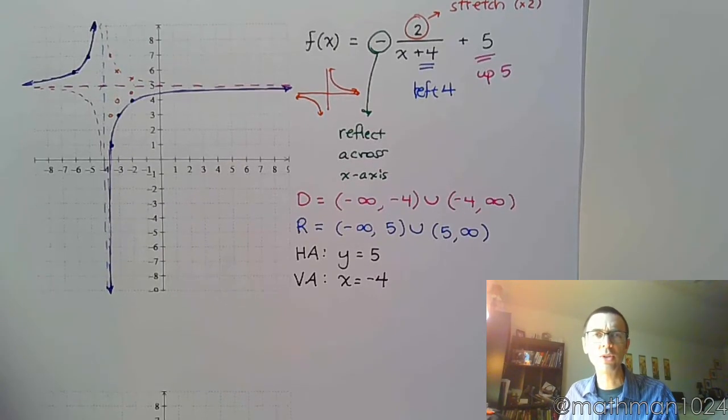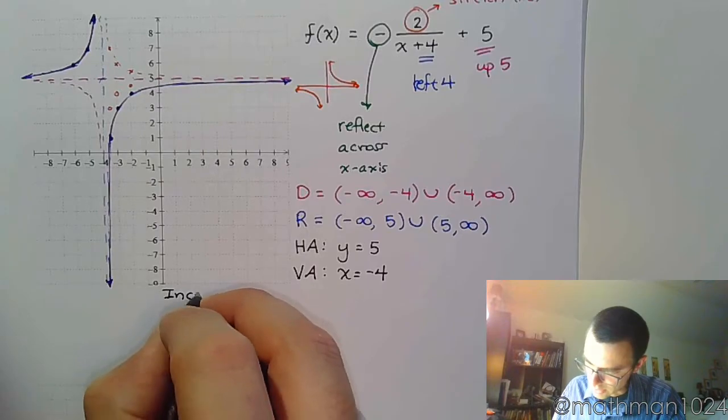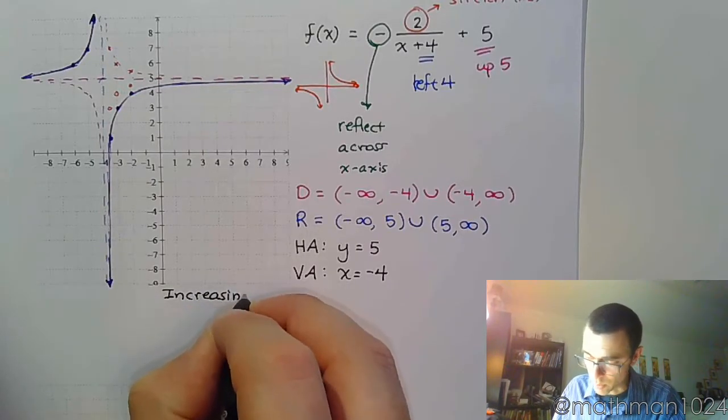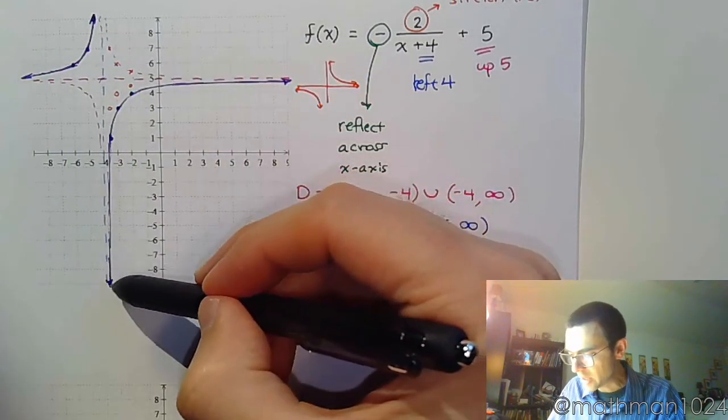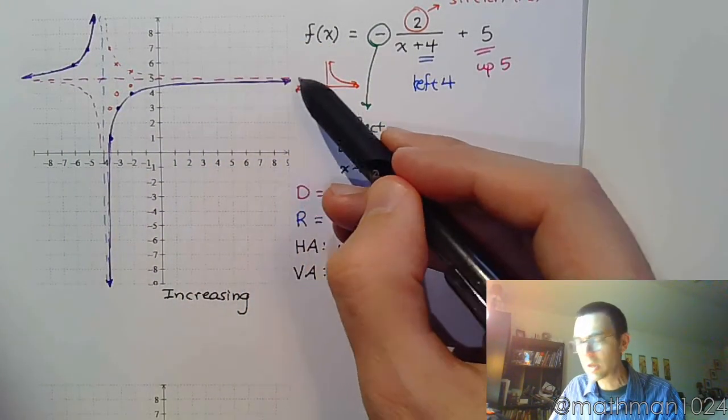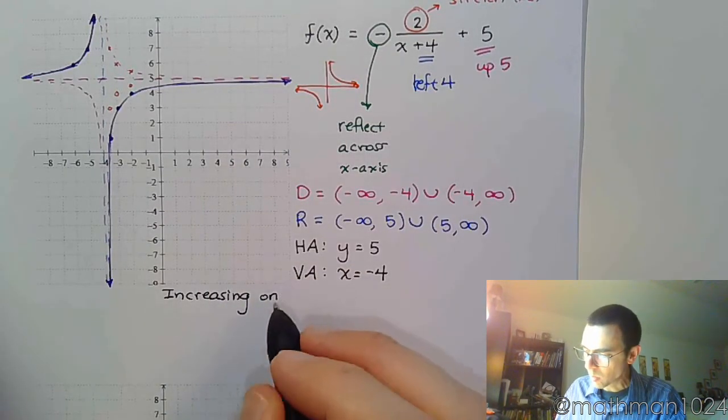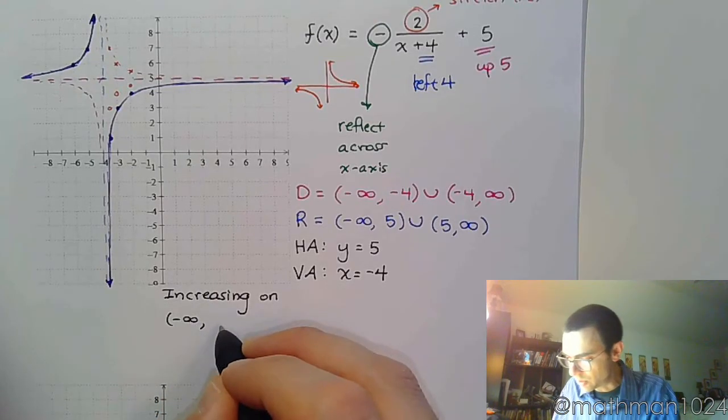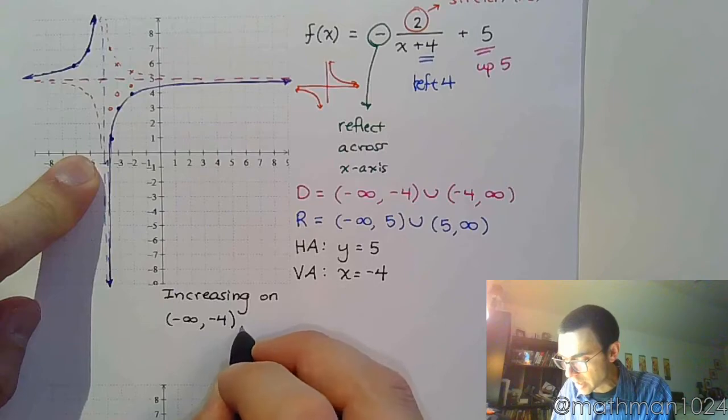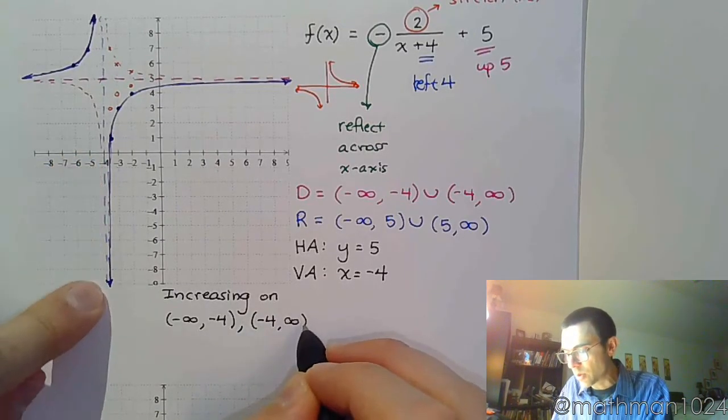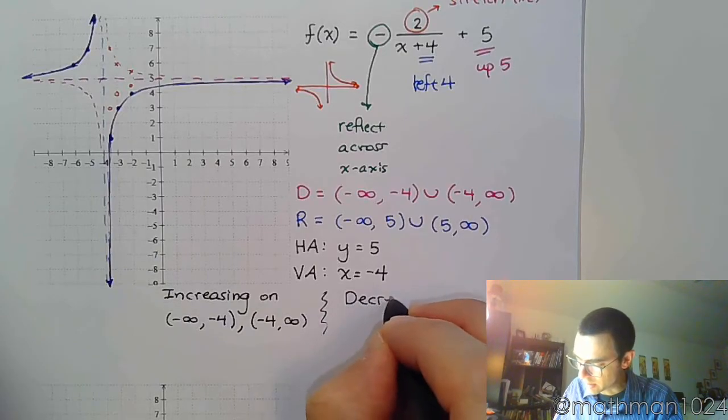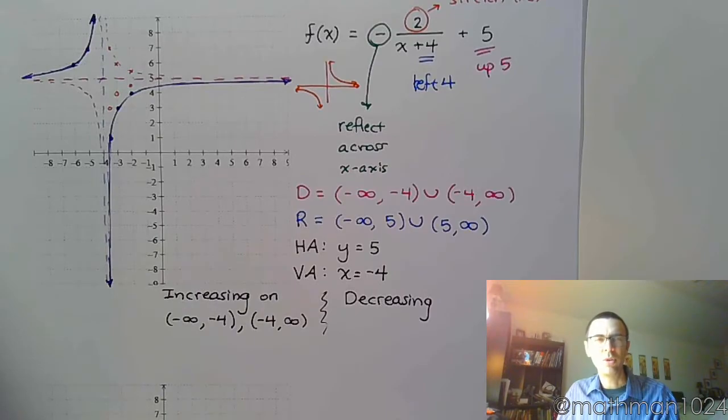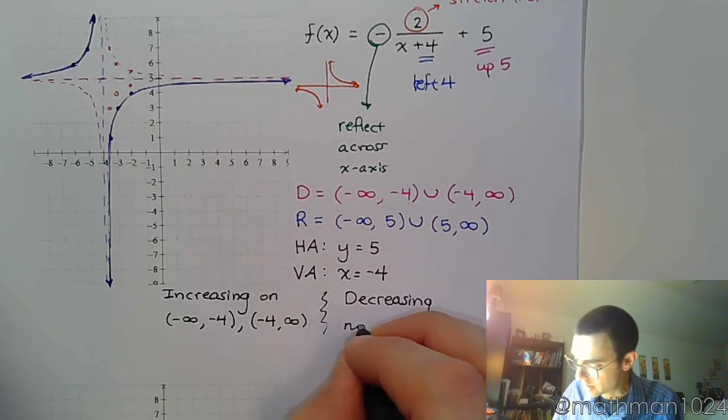And let's talk about where are we increasing and where are we decreasing. So where are we increasing, if at all? Because in the last example, we weren't increasing anywhere. Trace from left to right. From left to right, we see that we are going up here. And even here, as we go from left to right, we're going up. So we're increasing not only on that open interval from negative infinity to this x value here of negative 4, but also from negative 4 to infinity. We're increasing.